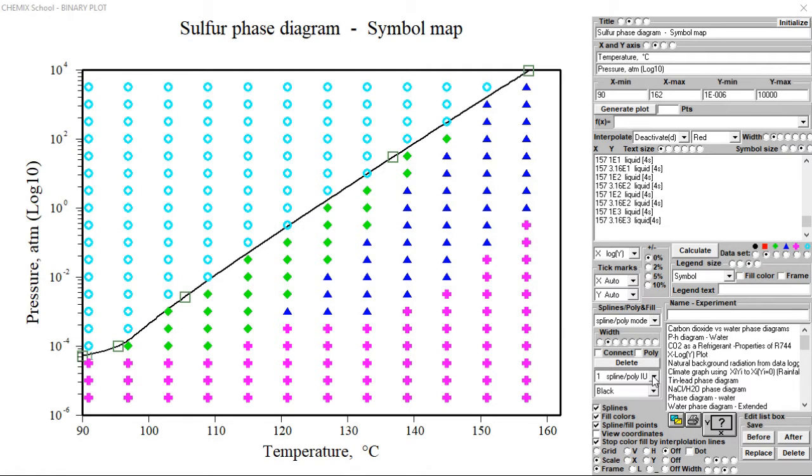To create a new spline curve, select spline number 2. Isolate a new phase region by setting off 5 new spline points between the diamond shaped symbols and the other symbols.